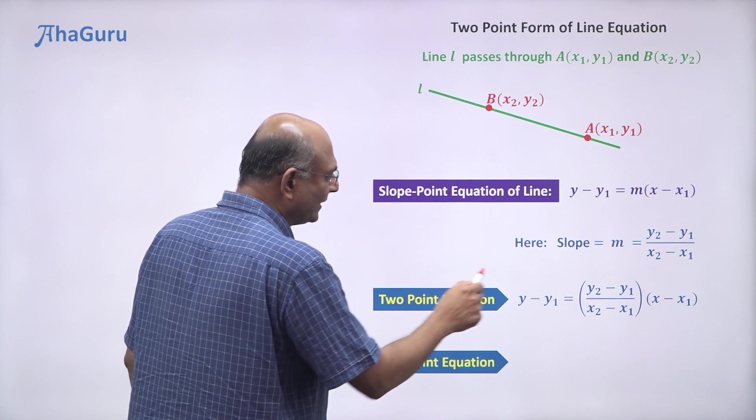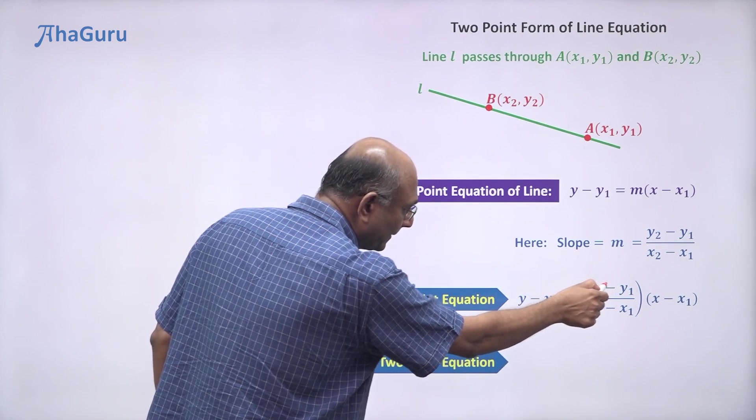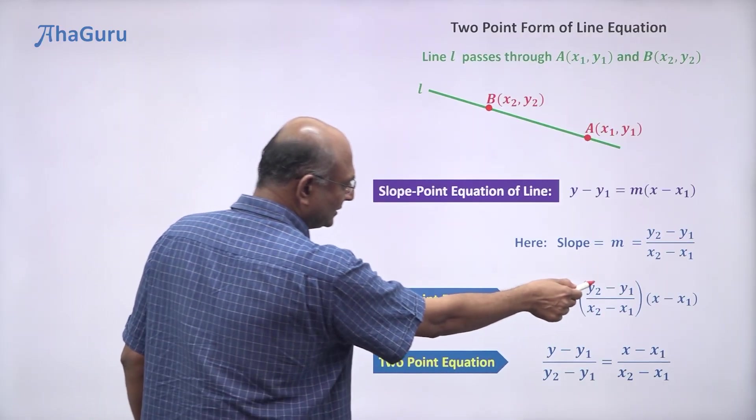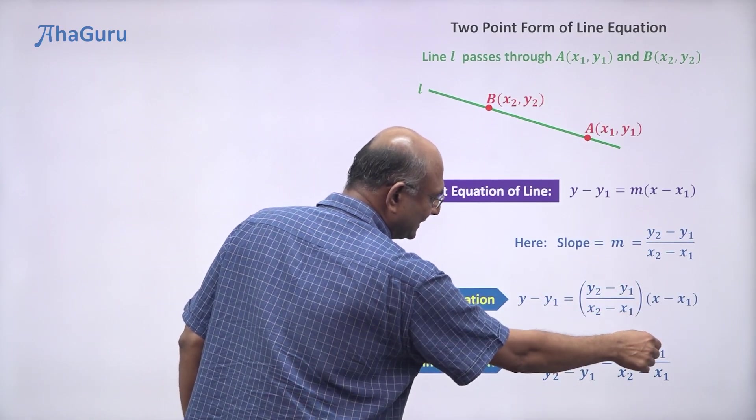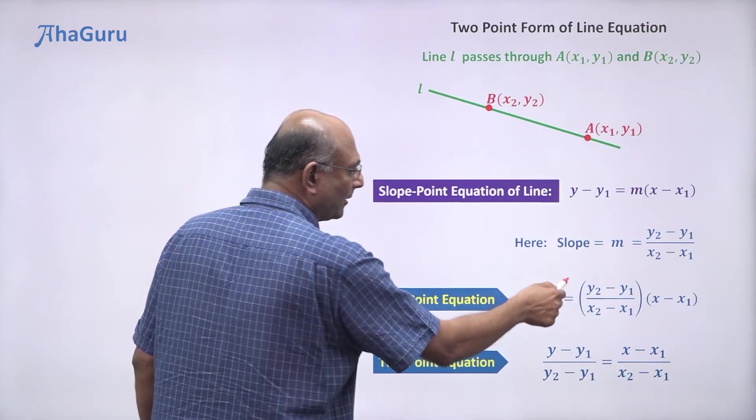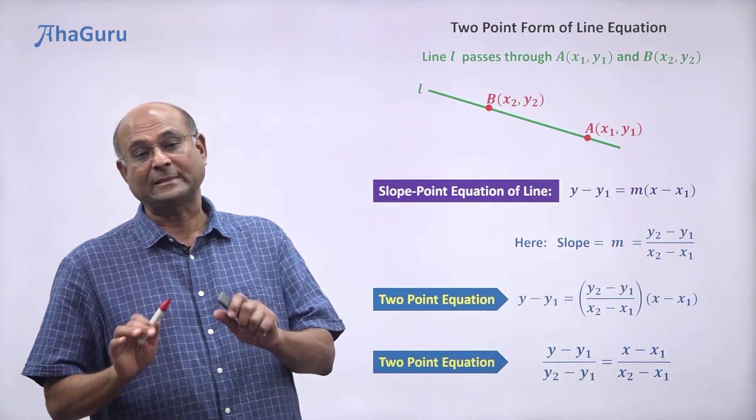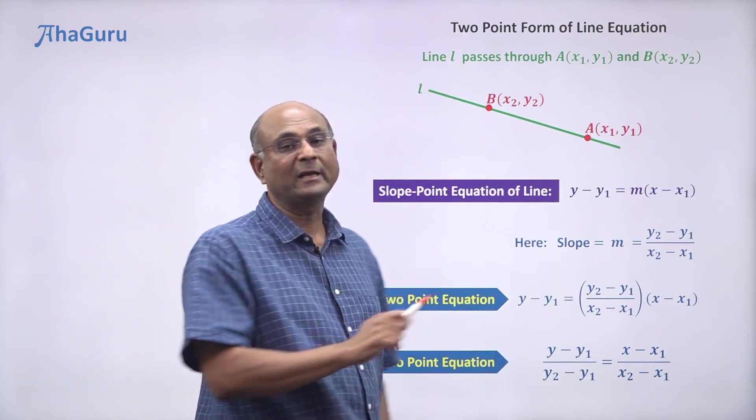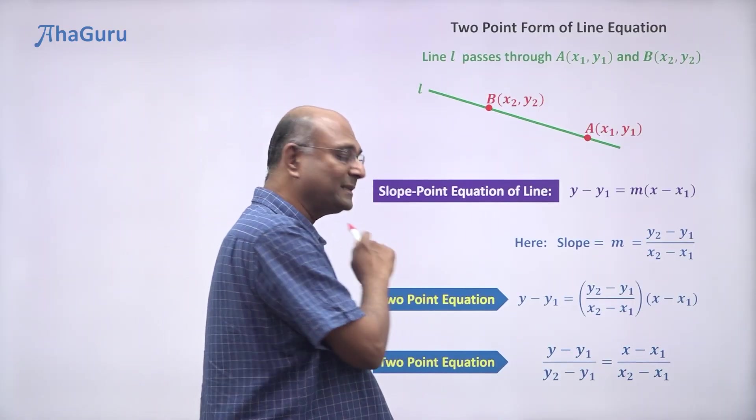But sometimes people like to rewrite this in a slightly different way, so they write (y - y₁)/(y₂ - y₁) = (x - x₁)/(x₂ - x₁). You just bring this down.